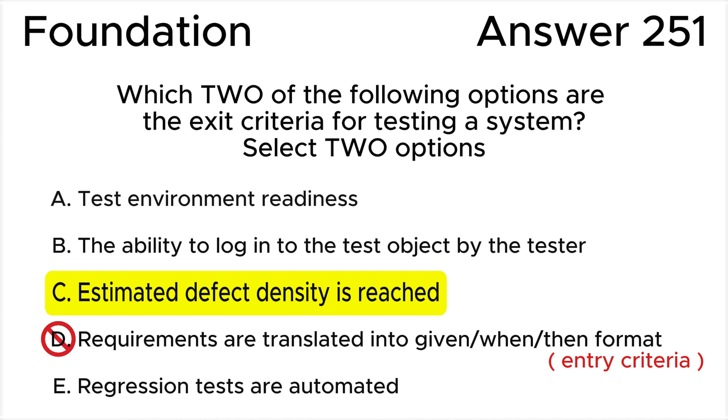Answer E is valid because automation of regression tests is a completion criteria, hence it belongs to the exit criteria. In summary, all of the above leads us to the correct answers C and E.